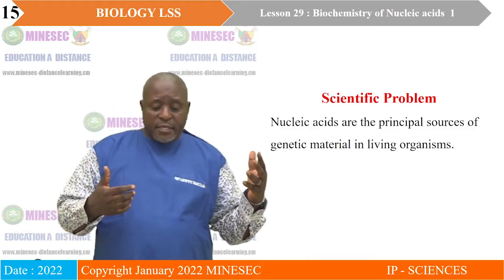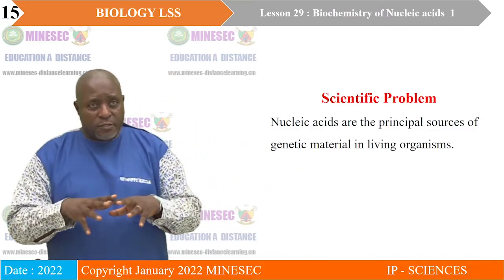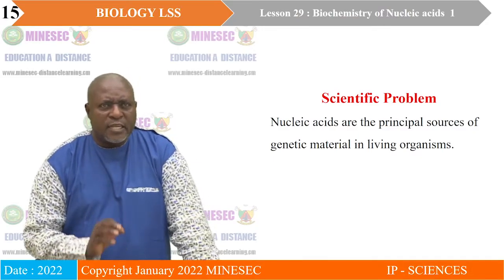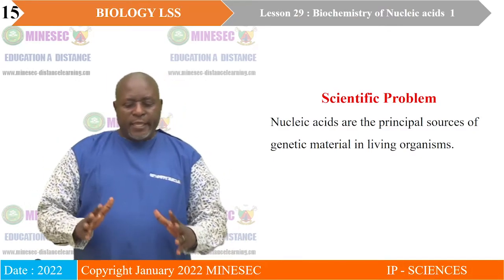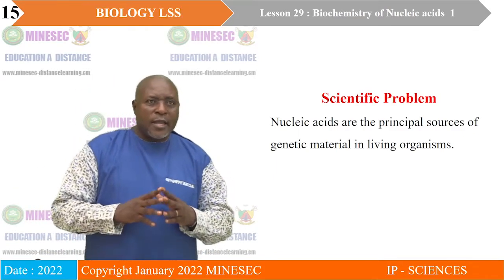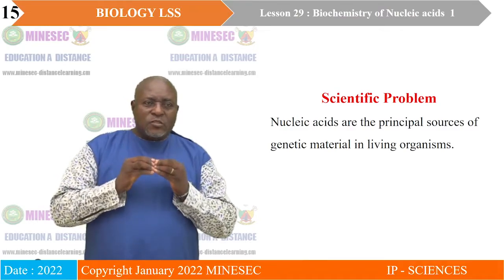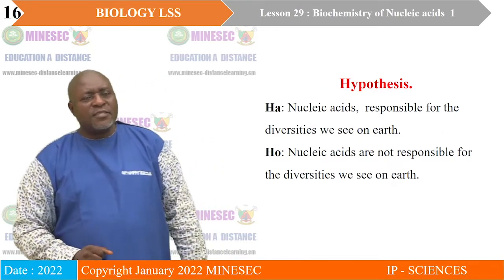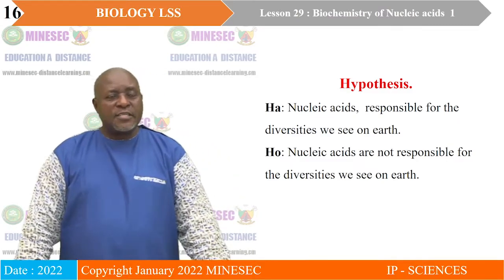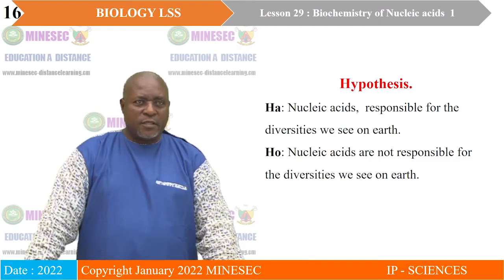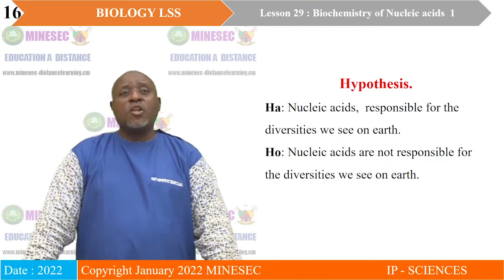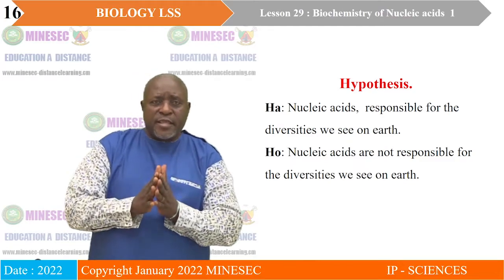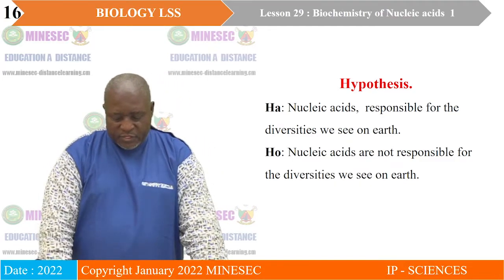We don't have nucleic acid in the mitochondria or ribosomes — we have them in the nucleus and another type in the cytoplasm. Nucleic acids are the principal sources of genetic material in living organisms, and these nucleic acids determine and control the variety we see in nature. The hypothesis is that nucleic acids are responsible for the diversity we see on Earth. The null hypothesis would be that nucleic acids are not responsible for this diversity — we are going to see whether nuclear acids are truly at the base of these diversities.